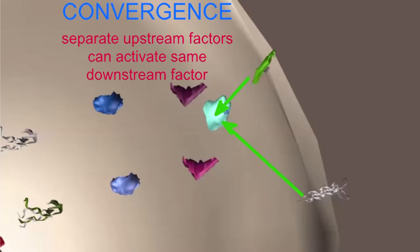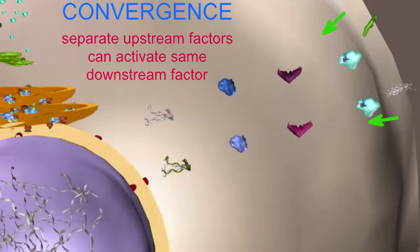For example, a receptor tyrosine kinase or a G-protein coupled receptor might set in place a series of events which would activate the same G-protein,